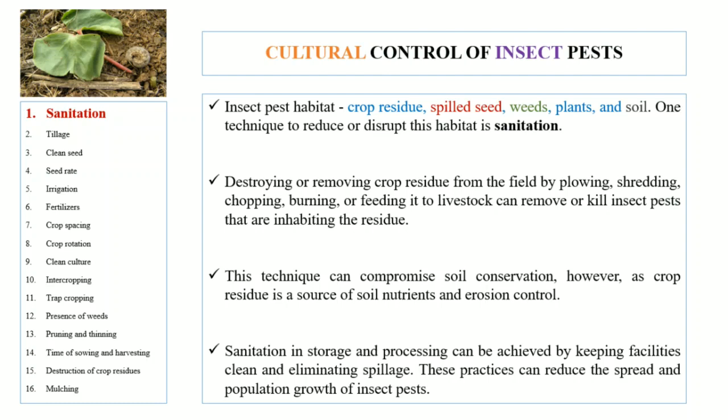Crop residues are the materials that are left in an agricultural field after the crop has been harvested. These residues include stalks, stems, leaves, and seed pods. The methods that can be used to remove this crop residue from the fields include blowing, shredding, chopping, burning, or feeding the crop residue to livestock.